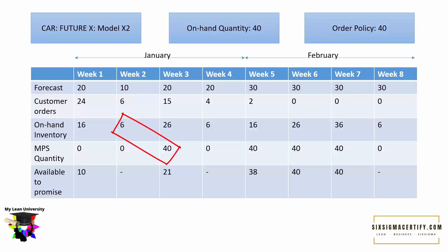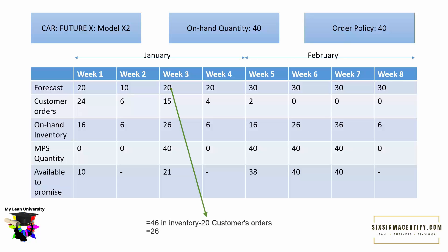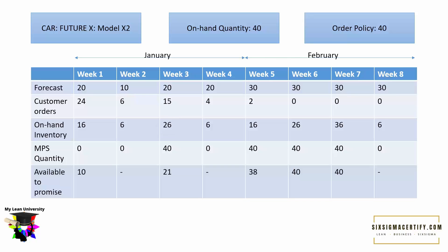By week three, we produce 40 cars and already have 6 in stock, giving us 46 total. After fulfilling the demand of 20 cars, we have 46 minus 20 equals 26 on-hand inventory. For week four, demand is 20 cars and we have 26, so 26 minus 20 leaves 6 on-hand. No new production is needed. For week five, demand is 30 but we only have 6, so we produce another lot of 40. Adding 40 plus 6 gives 46, and 46 minus 30 leaves 16 on-hand inventory after week five.